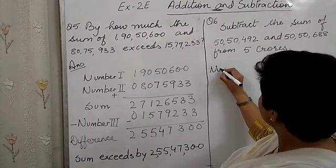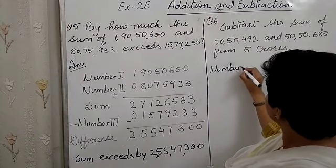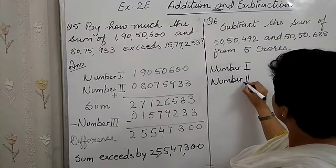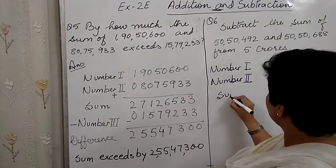So number 1 is 50,50,492. Number 2 is 50,50,688. Number 1 and number 2 will be added and we will get the sum.